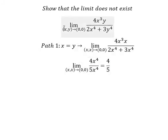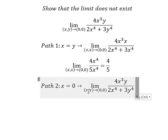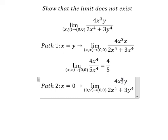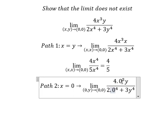Path 2: x equals 0. In this situation we put 0 in here. We have 0 in here and 0 in here. Because we have 0 in the numerator, we have 0.